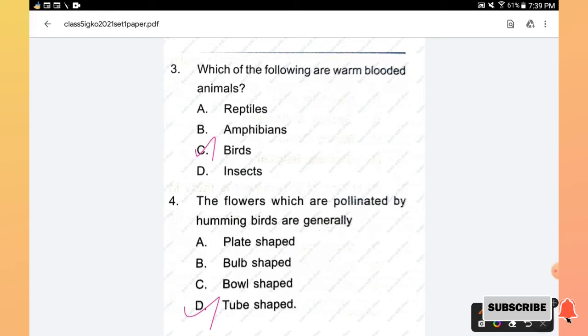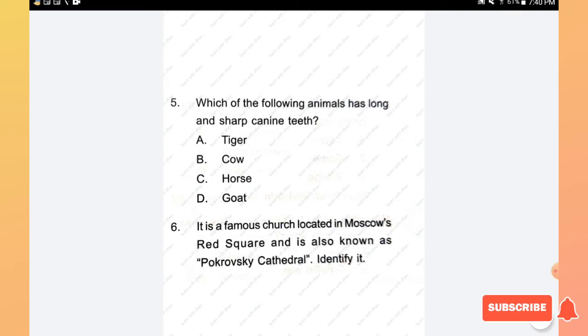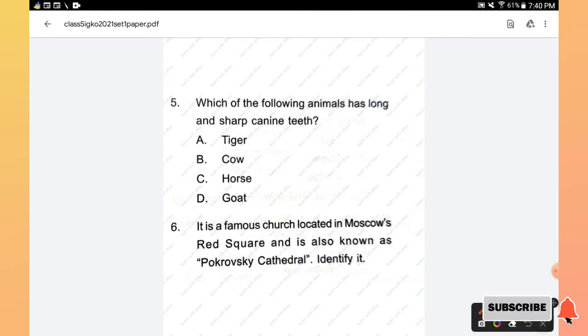Question number 4: The flowers which are pollinated by hummingbirds are generally plate shaped, bulb shaped, bowl shaped, or tube shaped. The right answer is option D, tube shaped.